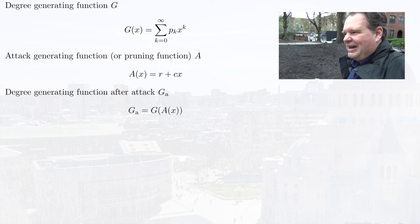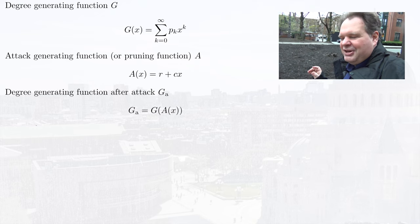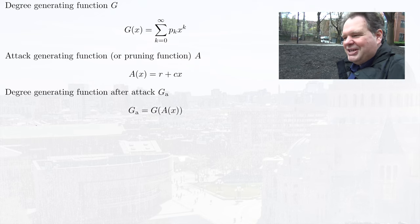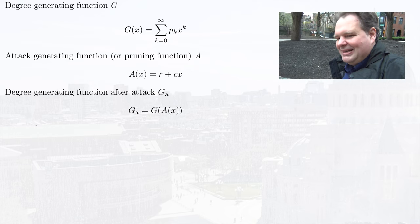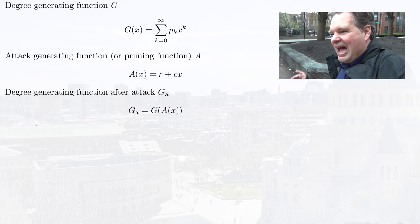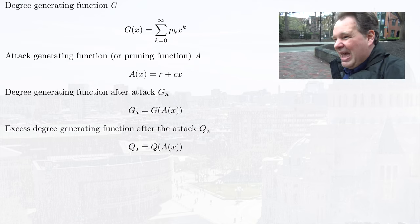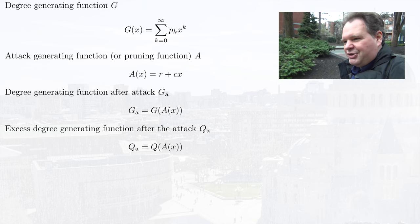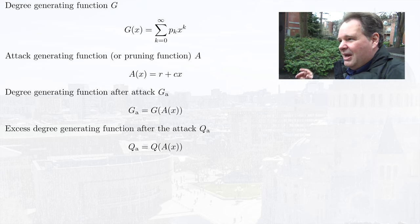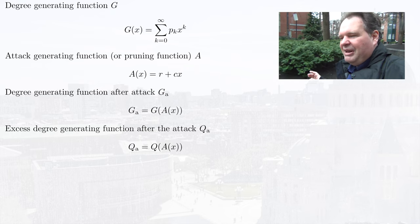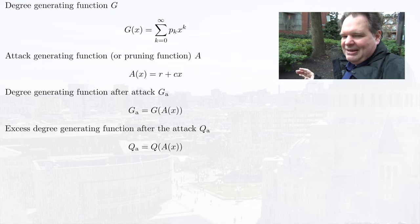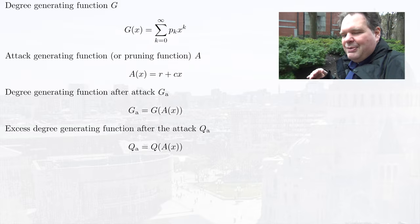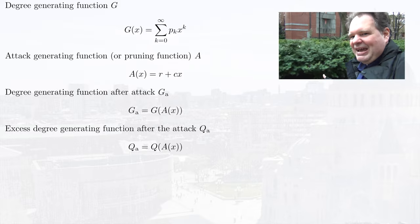Now we can use the dice-of-dice rule and plug this attack generating function into our degree generating function, and that gives us the degree generating function after the attack. We can do the same thing for the excess degree generating function — we take our old excess degree generating function and plug in this attack function, giving us the excess degree generating function after the attack.